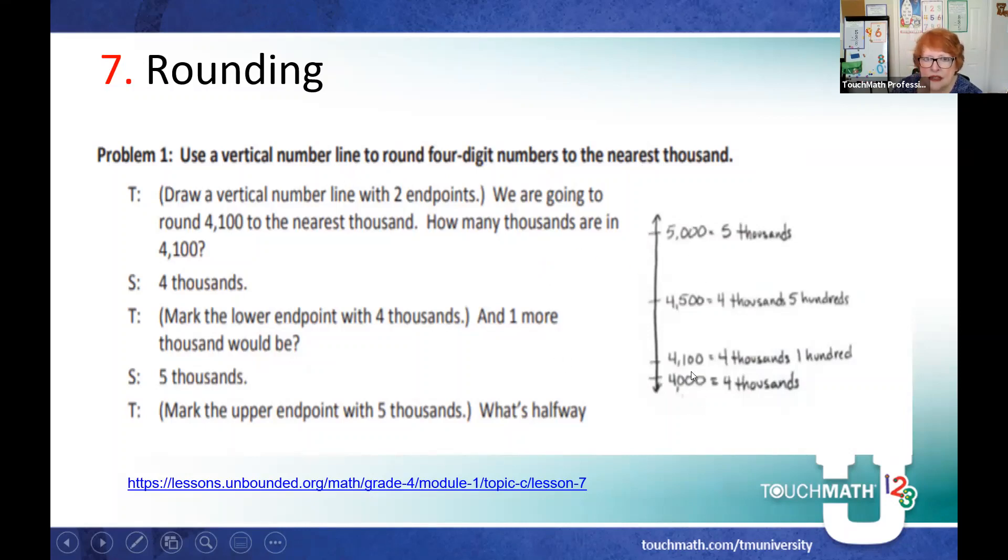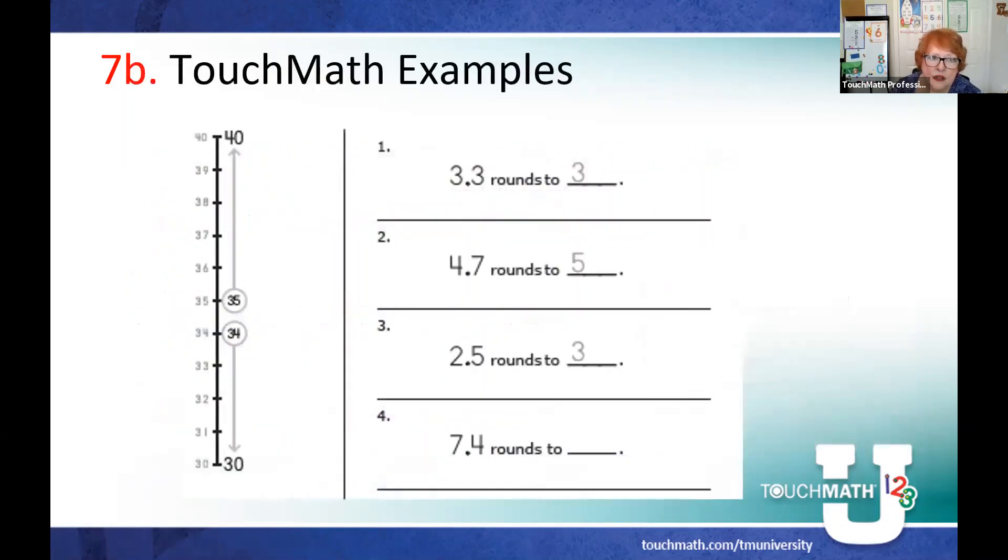But if I'm going to round numbers, four-digit numbers, they talk about having a starting place and an ending place. And then you mark off in between the numbers that would fall between those two numbers. So in this example, if I want to round 4,100 to the nearest 1,000, first, my starting point has to be 4,000. My top point is 5,000. Midway is 4,500. So the students can estimate in between 4,000 and 4,500 where 4,100 would be. And so is it closer to 4,000 or is it closer to 5,000? And so using the number line helps them with rounding.